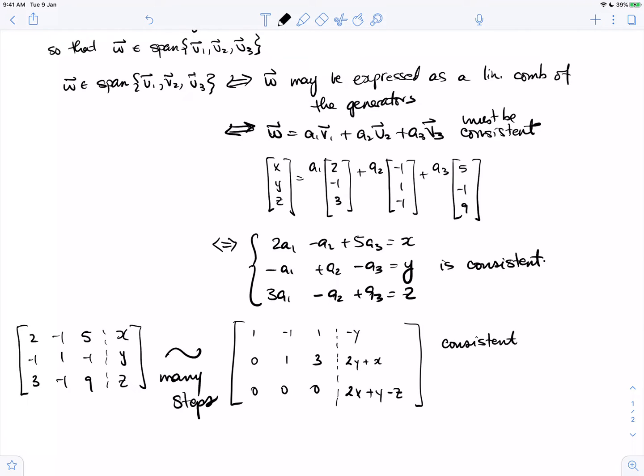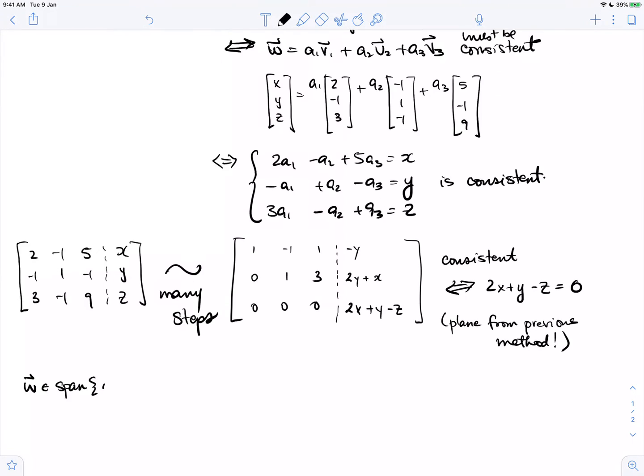If and only if there are no inconsistencies, so if we look at this bottom row, we have a rank of 2 already guaranteed in the augmented matrix. We have to make sure that there are no inconsistencies, which means that 2x plus y minus z had better be 0 to give us a consistent linear system, which is what we need for w to be in the span. Now you might recognize this. This was the plane that we got in the previous video using the geometric method.